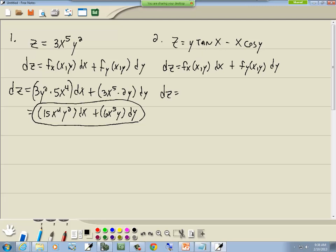Let's take the partial derivative of this with respect to x. The y is just a constant that stays out in front. The derivative of tangent is secant squared, so this will be y secant squared x. And over here, the cosine y is just a constant that stays out in front, and the derivative of x is 1, so this becomes minus cosine y dx.